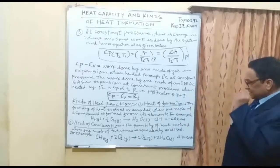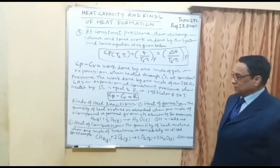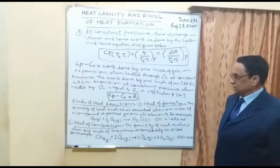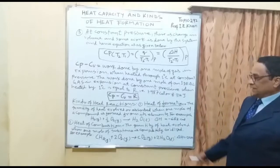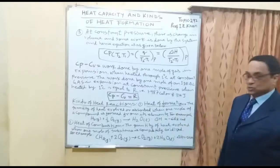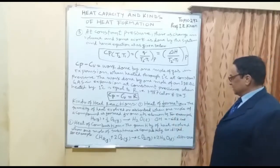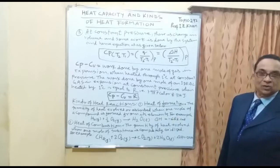For example: H₂(g) plus ½O₂(g) gives H₂O. In this case, delta H equals minus 68 kilocalories.